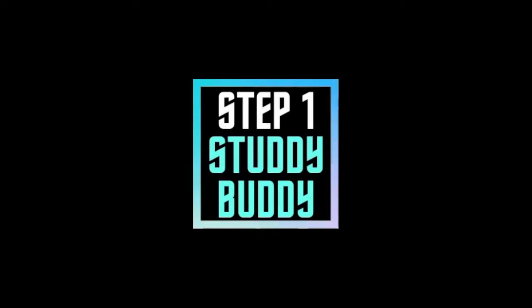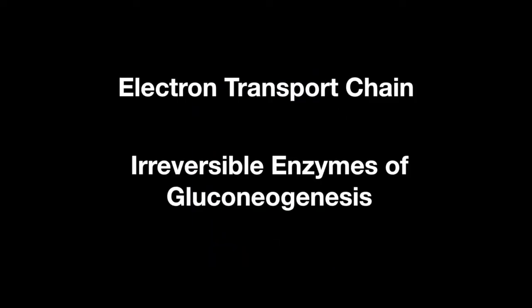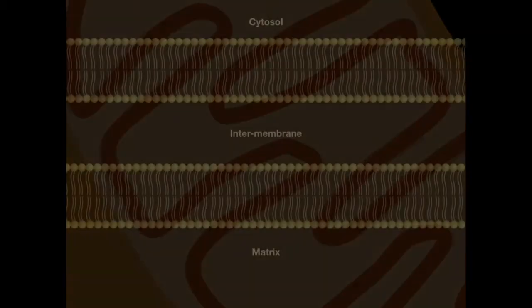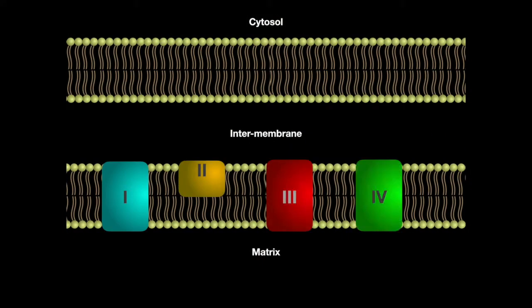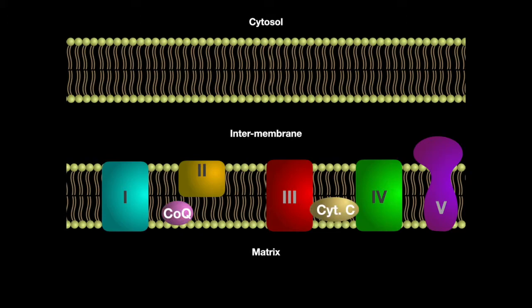Welcome to the Step 1 Review Study Guide. In this lesson, we learn about the electron transport chain and the irreversible enzymes of gluconeogenesis. The electron transport chain consists of five complexes, the fifth being ATP synthase, and two membrane component electron transporters: coenzyme Q and cytochrome C.